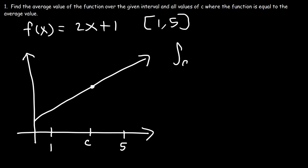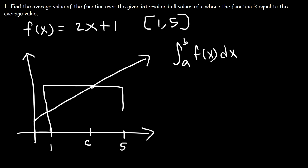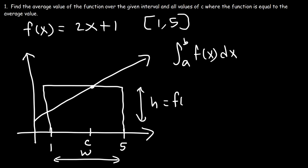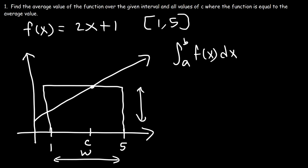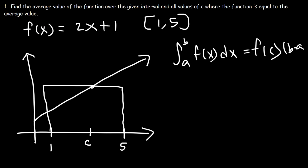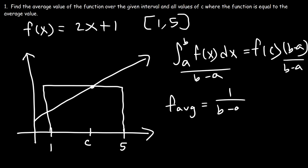The area under the curve is the definite integral from a to b. The area of the rectangle is the height times the width, where the height is f of c and the width is b minus a. To get the average value, we isolate f of c by dividing both sides by b minus a. So the average value is 1 over b minus a times the integral from a to b of f of x dx.